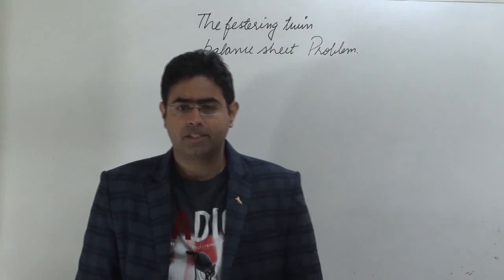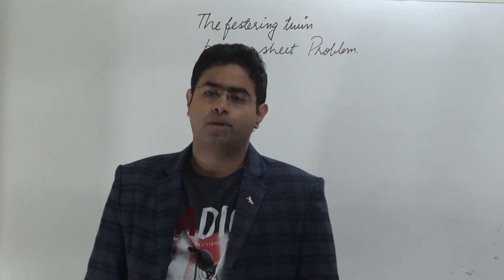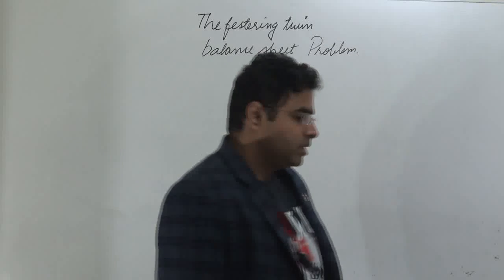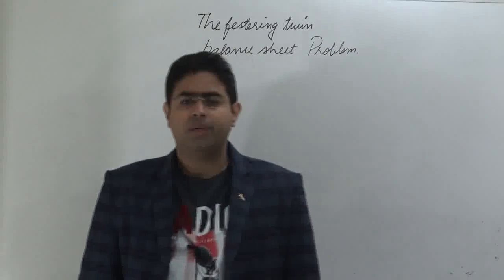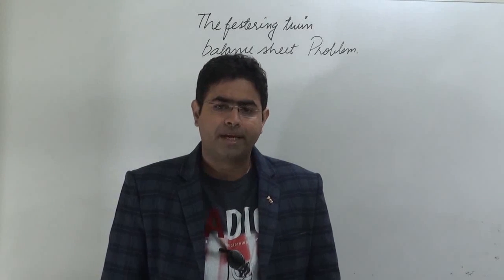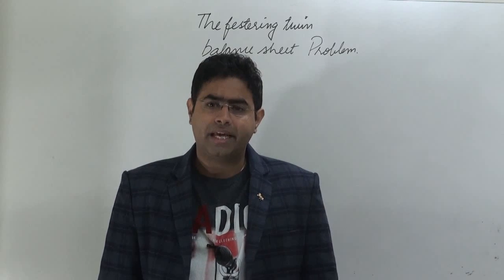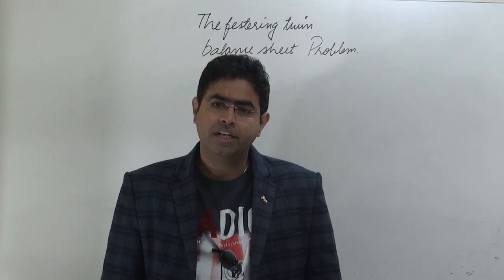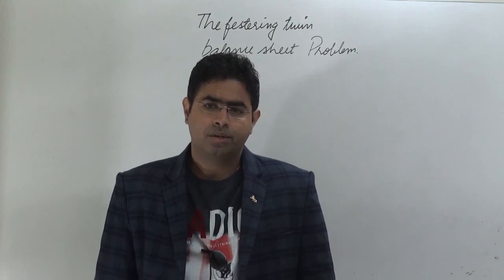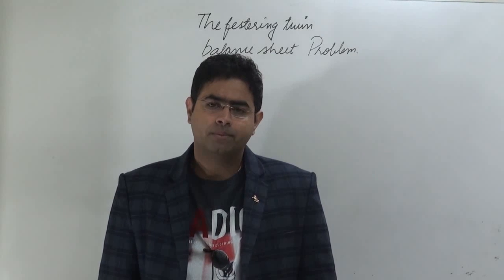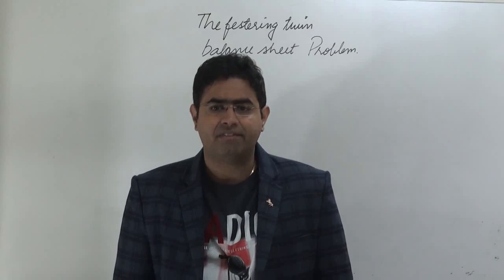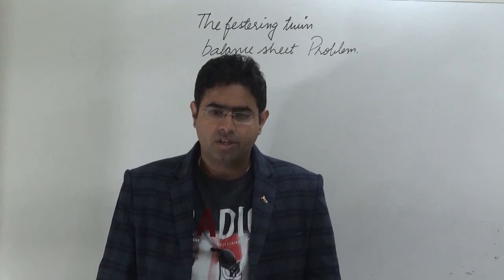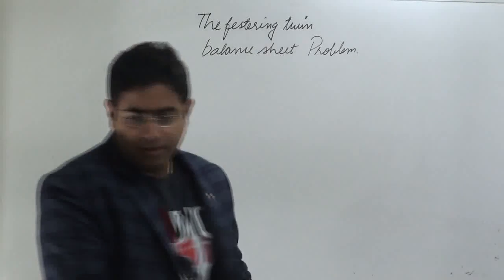Hello students, welcome to the class on economic survey. In this class I will be dealing with the fourth chapter of the economic survey. The name of the chapter is 'The Festering Twin Balance Sheet Problem.' This chapter basically deals with the non-performing assets of the banks, the increasing problem of it, and how this problem needs to be resolved at the earliest because it can have very grave repercussions for the Indian economy.